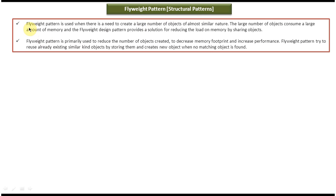This is the first explanation. Flyweight pattern is used when there is a need to create a large number of objects of almost similar nature. The large number of objects consume a large amount of memory, and the Flyweight design pattern provides a solution for reducing the load on the memory by sharing objects.